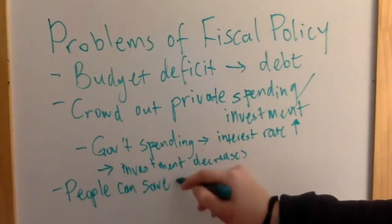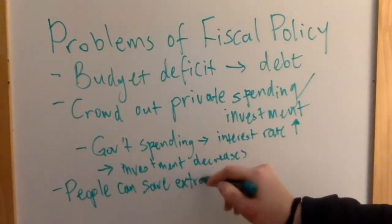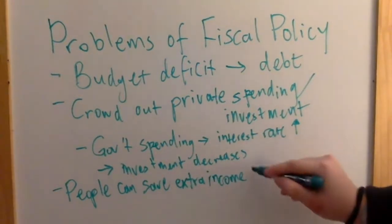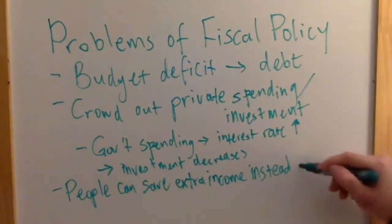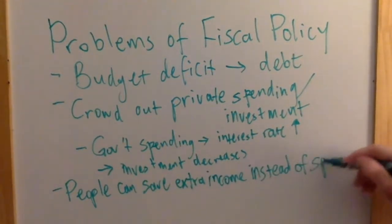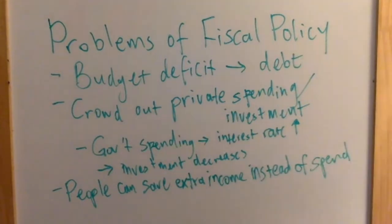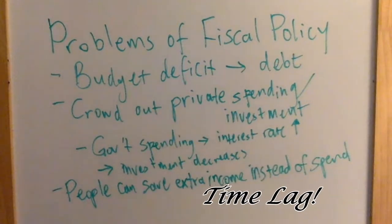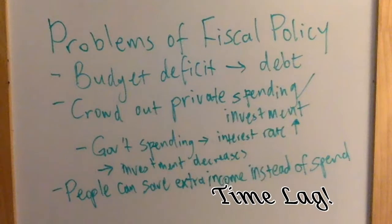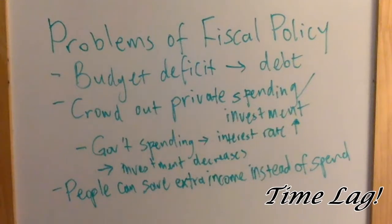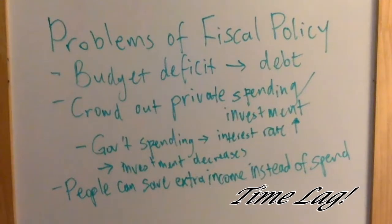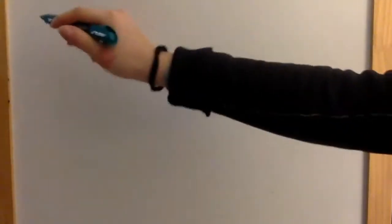Also, even though lowering taxes does give people extra income, consumers might choose to save that income rather than spend it, thus proving that the policy is ineffective. There is also a time lag for fiscal policy to become effective, and by the time it actually works, the situation might have already changed.